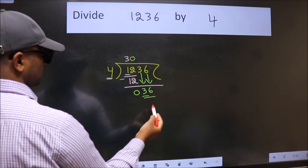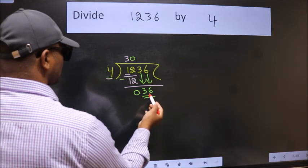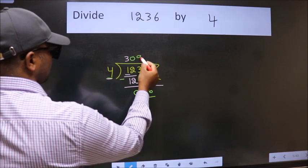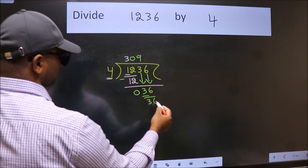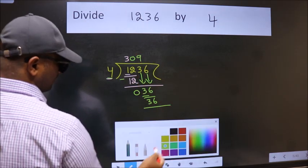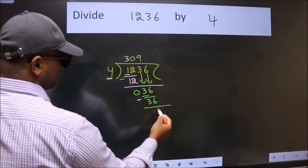So, 36. When do we get 36? In 4 table is 4 nines 36. Now, we subtract. We get 0.